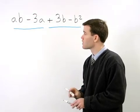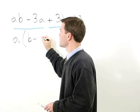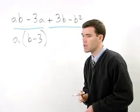For the first two terms, we can factor out an A, which leaves us with B minus 3 inside the parentheses.